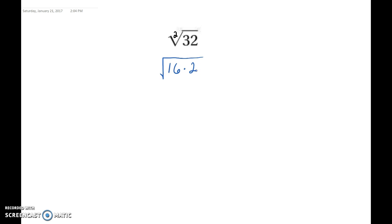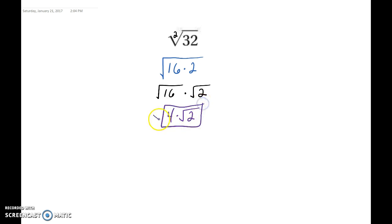We rewrite the square root of 32 as the square root of 16 times 2, because 16 times 2 equals 32 — we're not changing its value, just rewriting it. Just like we can multiply radicals with the same index, we can work in reverse and separate them: square root of 16 times square root of 2. The square root of 16 is 4, and we can't simplify the square root of 2, so the answer is 4 times the square root of 2. If you plug this into your calculator you get the same decimal value — this is the simplified form.